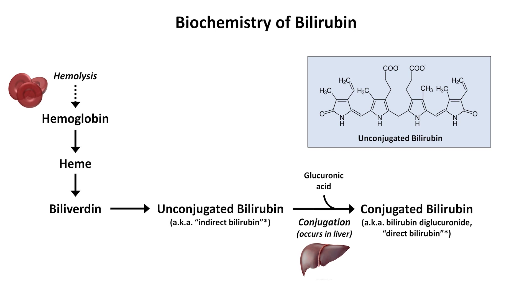Once conjugated, bilirubin is then excreted into the bile via hepatic ducts, which eventually drain into the duodenum via the common bile duct.